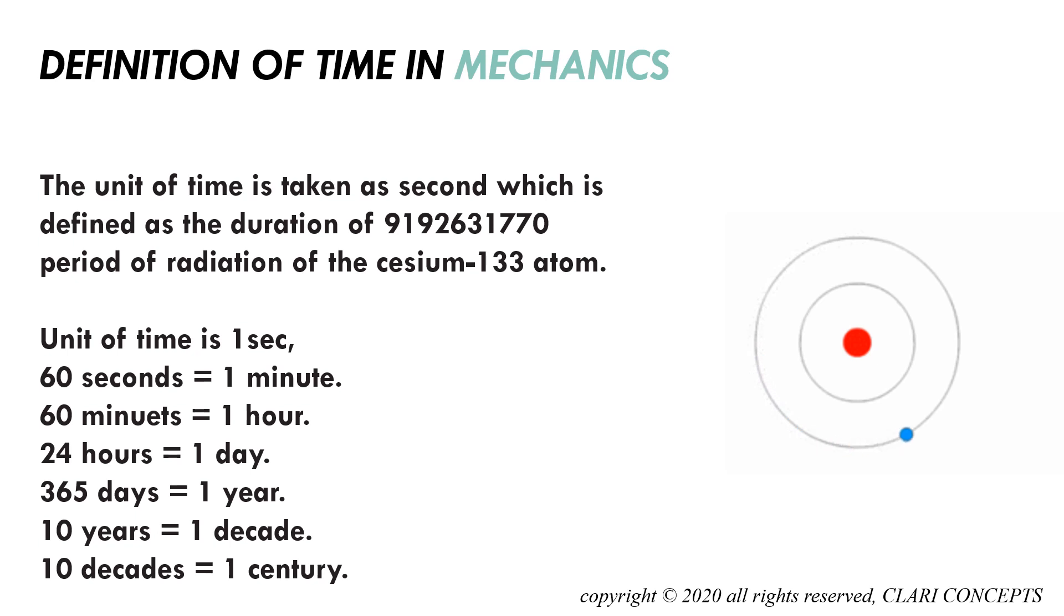To understand the larger quantities of time: 60 seconds equals one minute, 60 minutes equals one hour, 24 hours make a day, 365 days make a year. Similarly, 10 years make one decade, and 10 decades make a century, over which we address in terms of centuries. That is the definition of time.